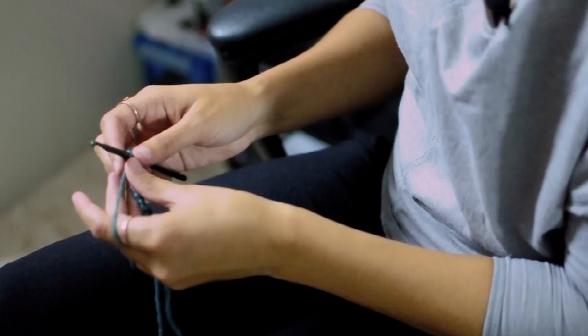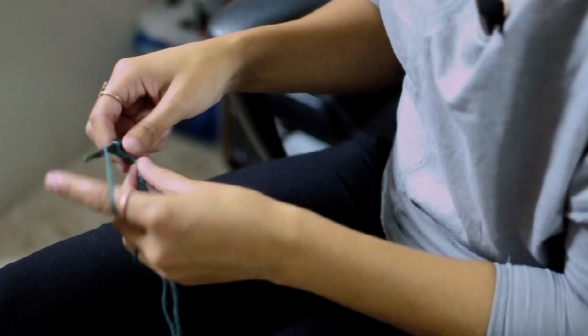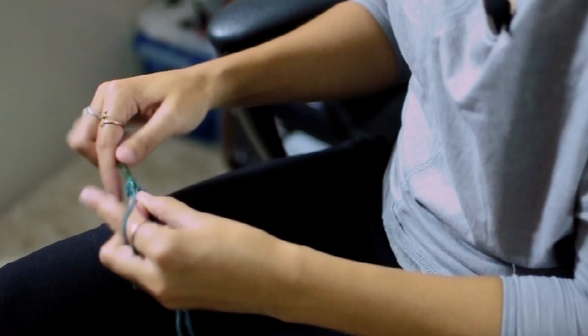So first go ahead and grab your yarn and then you're going to chain 16. And then you'll chain 2 and that will act as your first double crochet. And then into the third chain from the hook you'll add a double crochet. And then just go ahead and double crochet in each stitch all the way down.